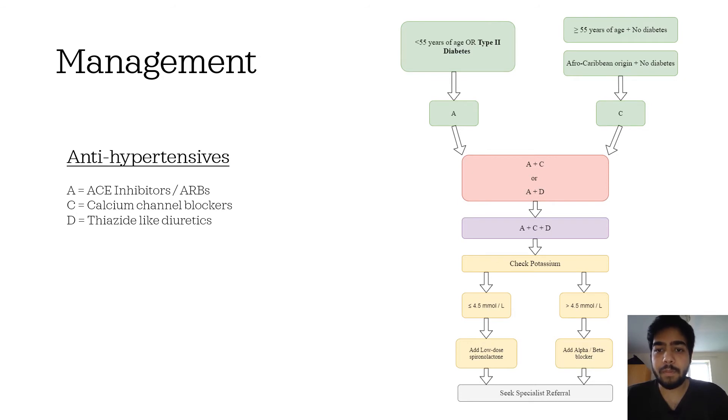If these first-line treatments don't work, you can combine ACE inhibitors or ARBs with calcium channel blockers, or you can combine ACE inhibitors or ARBs with thiazide-like diuretics. This is the second-line treatment. If the second-line treatment doesn't work, then you can combine all three drugs. This is the third-line treatment.